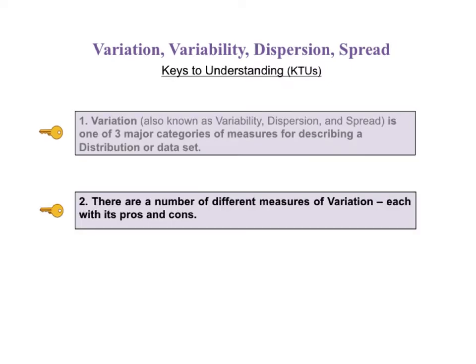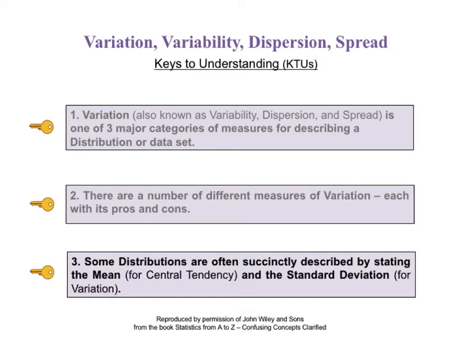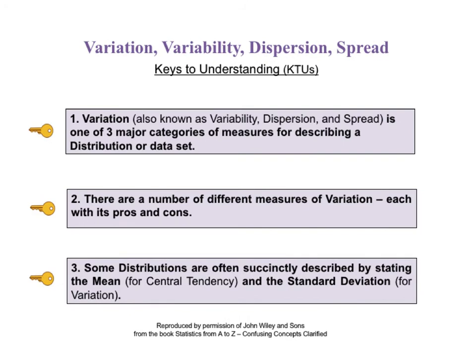The second KTU states there are a number of different measures of variation, each with its pros and cons. The third and final key says some distributions are often succinctly described by stating the mean for central tendency and the standard deviation for variation. Here on one page are the three keys to understanding the concept of variation. You may wish to pause the video and read them all together.